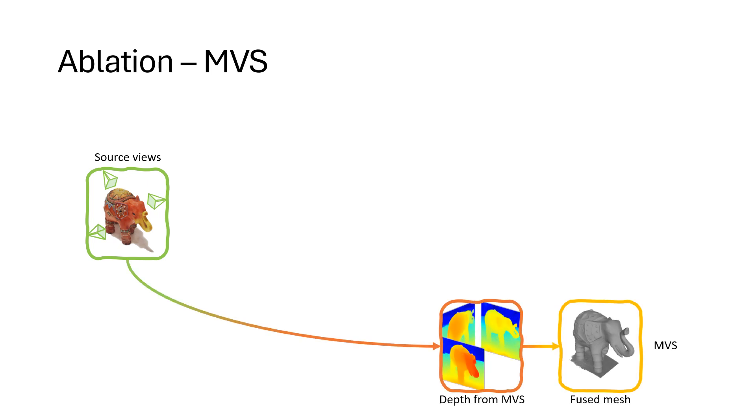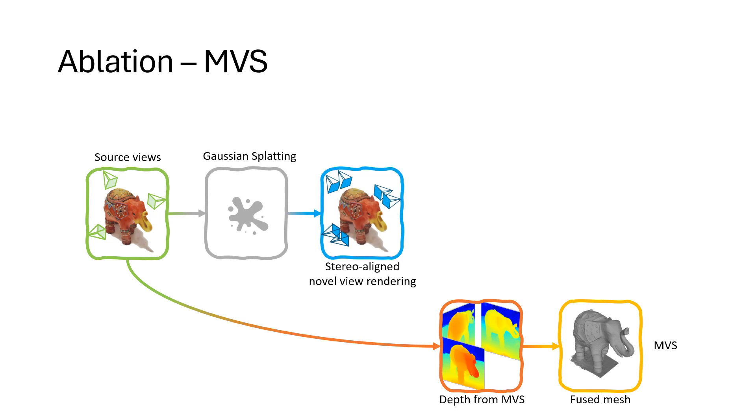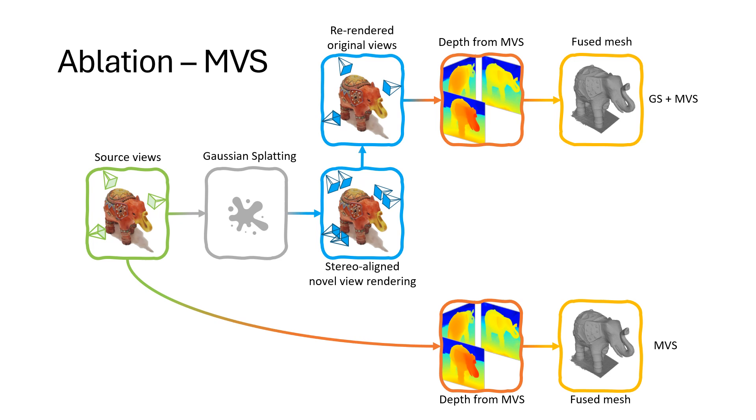For the second ablation, we stop after rendering the stereo pairs. We know that since the cameras are virtual, they might be better calibrated and improve multi-view stereo's performance. Thus, we take the left image from each rendered stereo pair, and feed it directly to the multi-view stereo model.